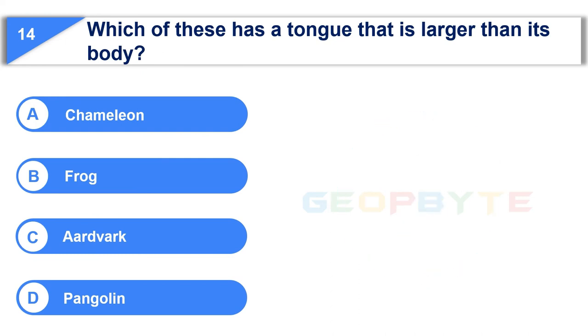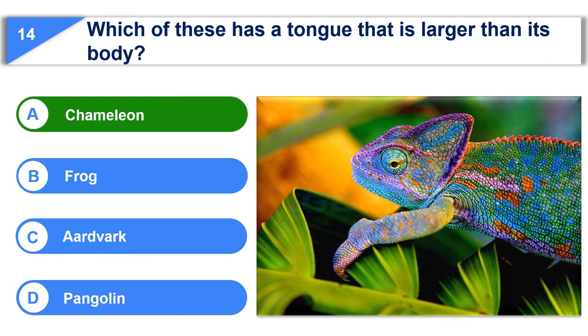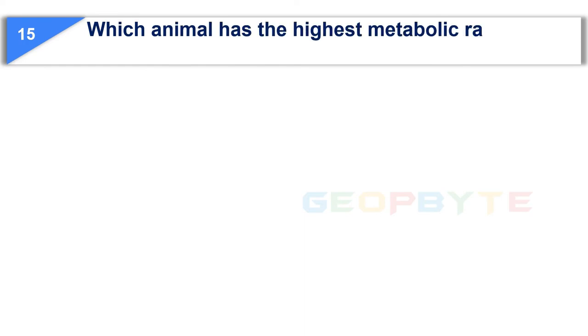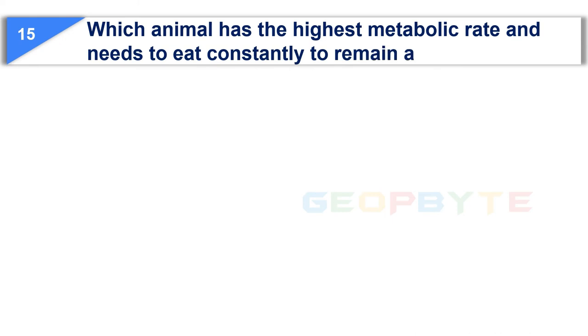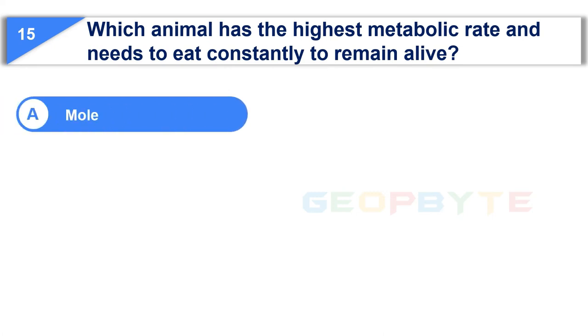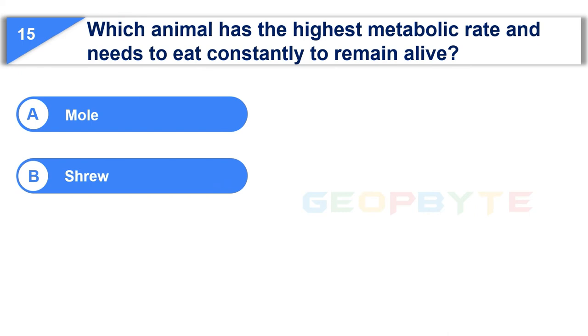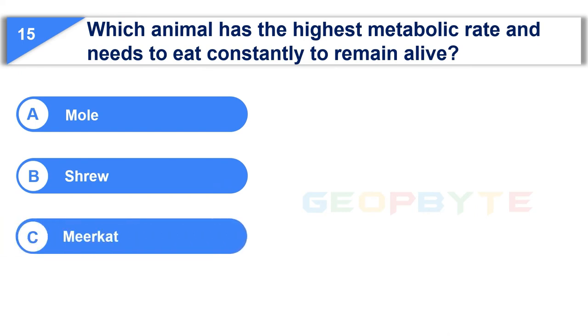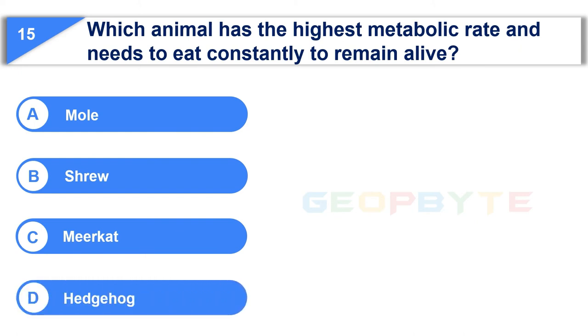Your time is up and the correct answer is Option A: Chameleon. Moving to the next question: which animal has the highest metabolic rate and needs to eat constantly to remain alive? Option A: Mole. Option B: Shrew. Option C: Meerkat. Option D: Hedgehog. Your time starts now.